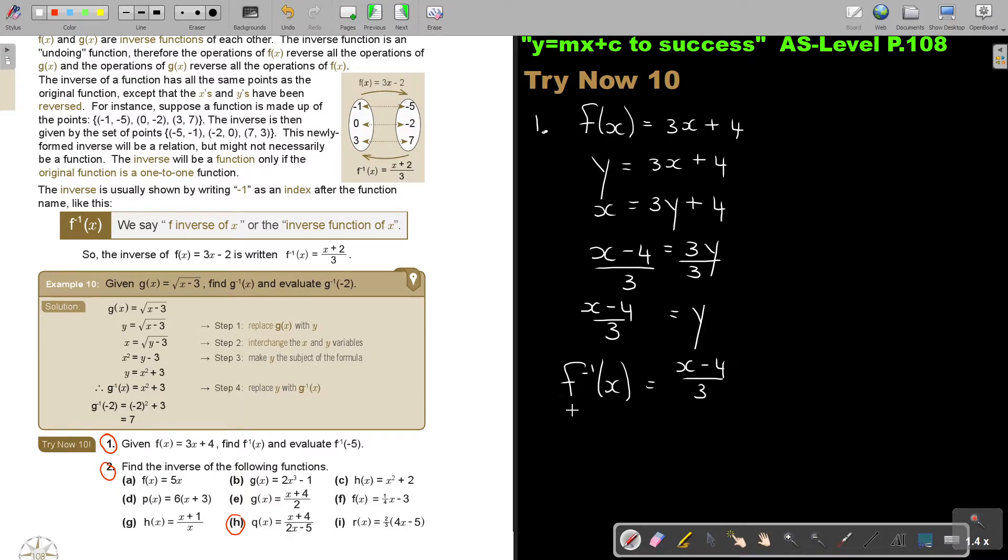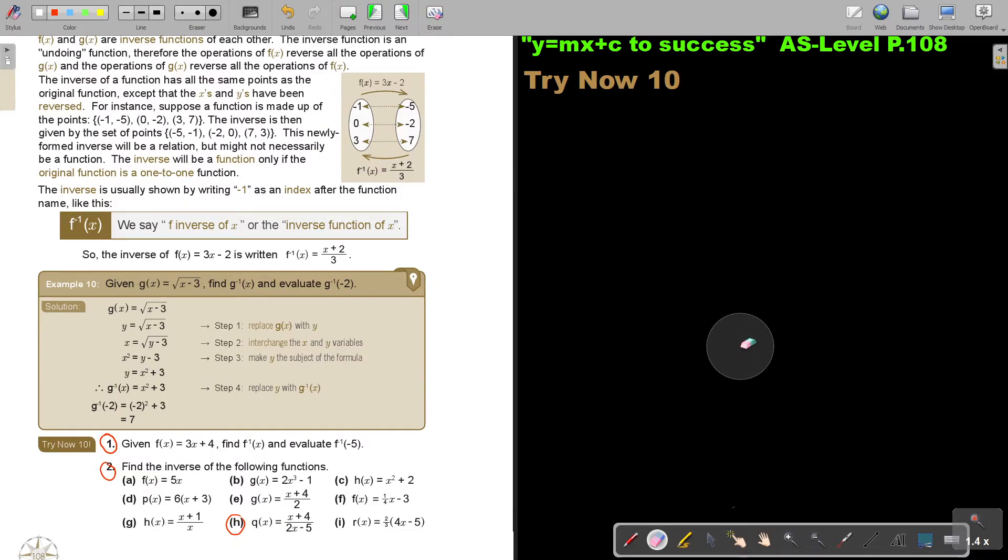And now, they want me to find F minus 1 of negative 5. And, it's negative 5 minus 4 over 3, and that's negative 9 over 3. And, the answer is going to be negative 3. And, that's the final answer. Just do number 2. Let's just make space. And, we're only going to do one there. 2H.